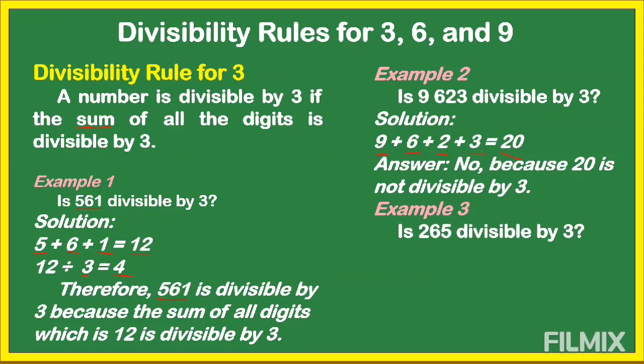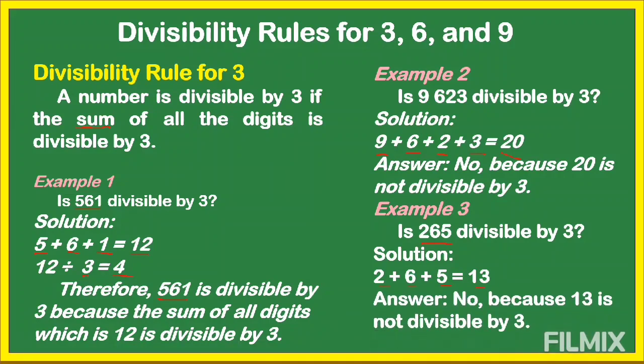Another example: is 265 divisible by 3? No. We add all the digits: 2 plus 6 is 8, plus 5 is 13. 13 is not a multiple of 3 — counting: 3, 6, 9, 12, 15 — so 265 is not divisible by 3.